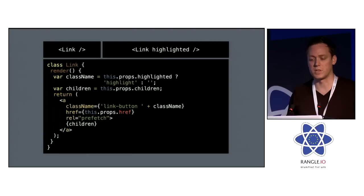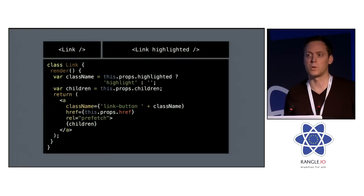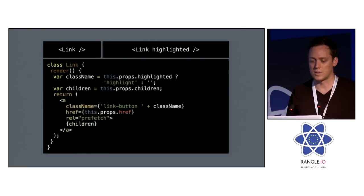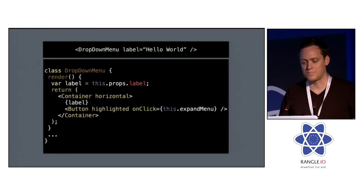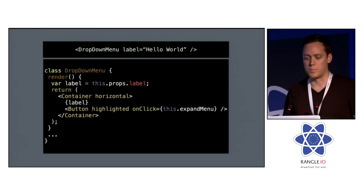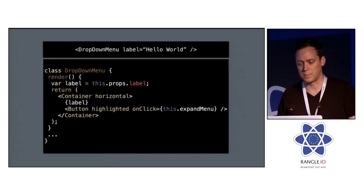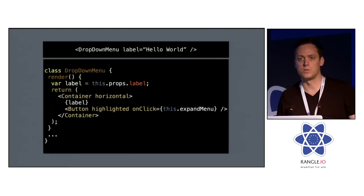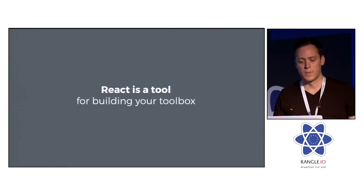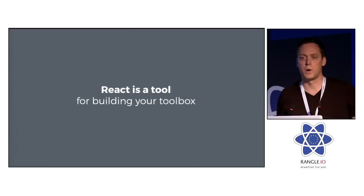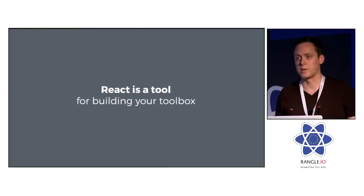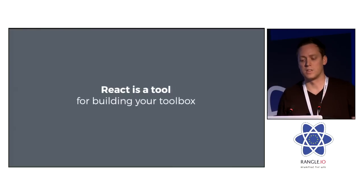For example, this would be trivial to port to React Native. You can create another link component for React Native, and then everyone that uses these link components will just work on React Native as well. This is the key to composition — it allows you to create these more refined abstractions. Then you can combine these components with other components and build out your toolbox. You learn, you iterate, you choose which components are needed. React is not an out-of-the-box UI library — it's not a virtual DOM library just allowing you to write the DOM. It's a tool for building out your toolbox of components.